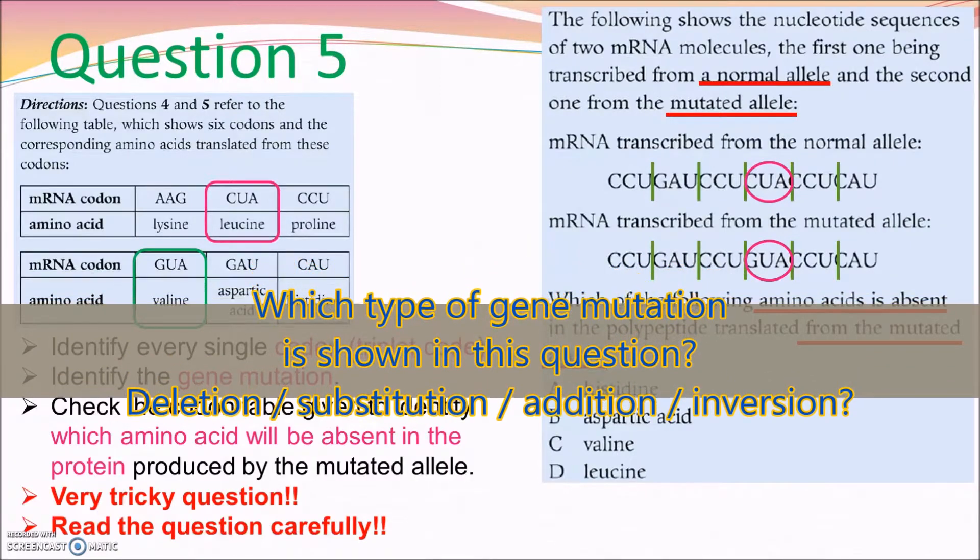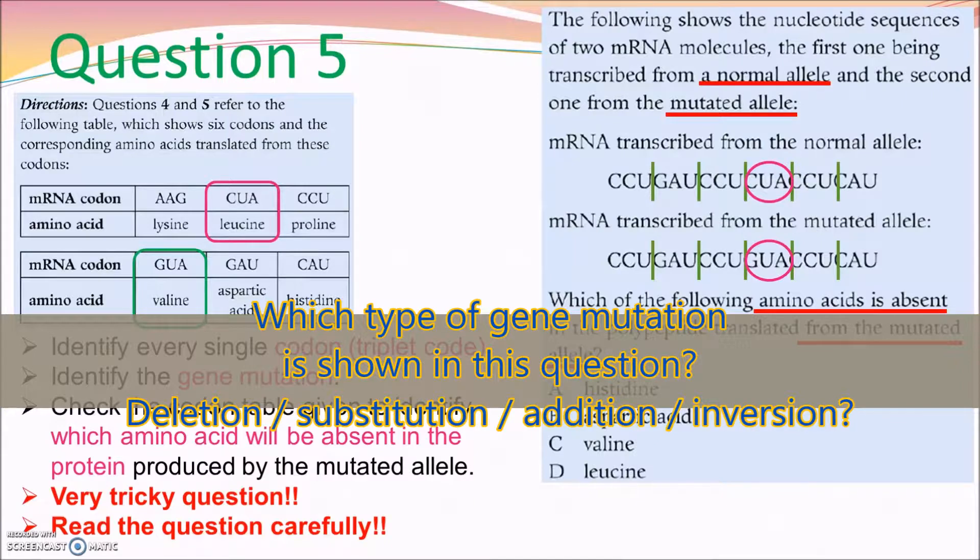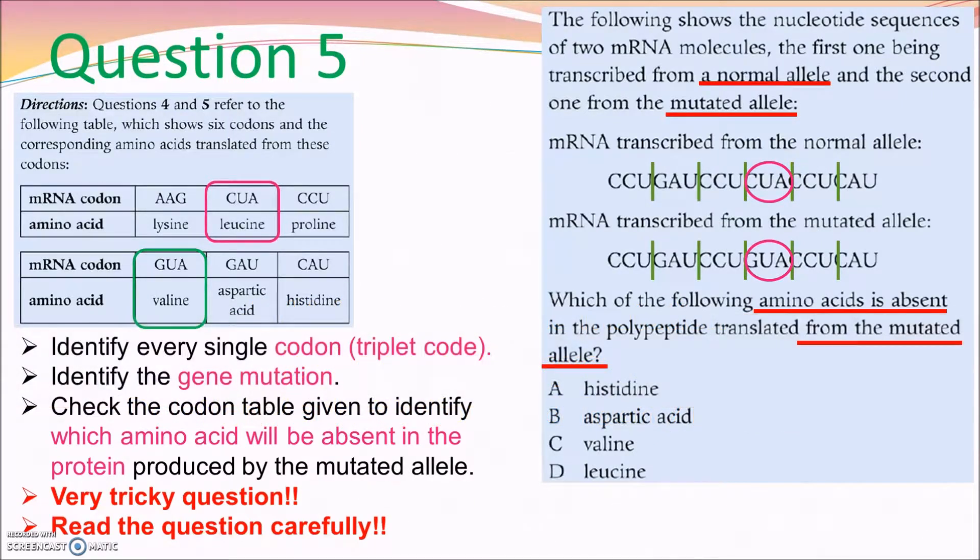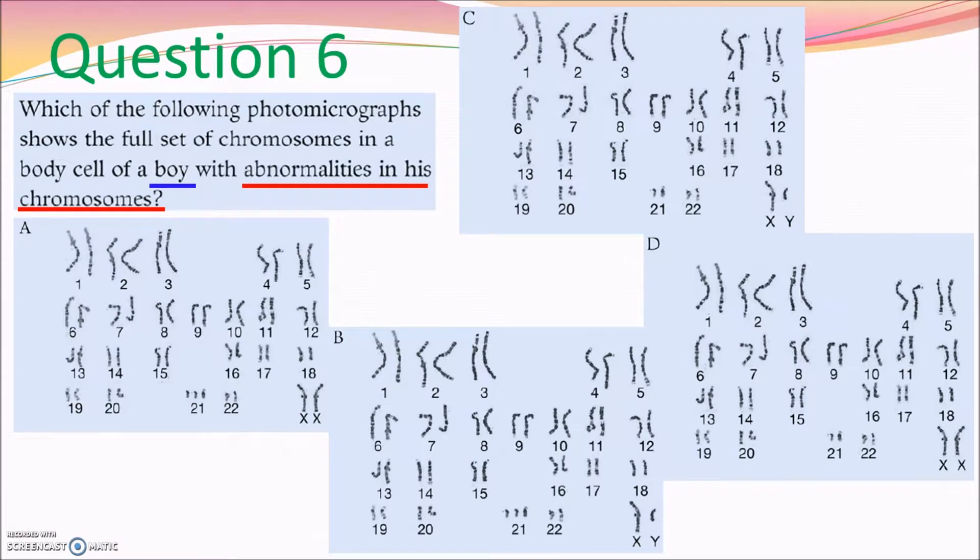So, which type of gene mutation is shown in this question? Is it deletion, substitution, addition, or inversion? Leave your answer in the comment for the prize. You can refer to the codon table given, and find the new amino acid coded. Therefore, options A and B are eliminated because the amino acid involved should be the valine and leucine. What I would like to remind you is that, please read the question carefully. It's asking about which amino acid is absent in the protein translated from the mutated allele. So, actually, the answer should be leucine.